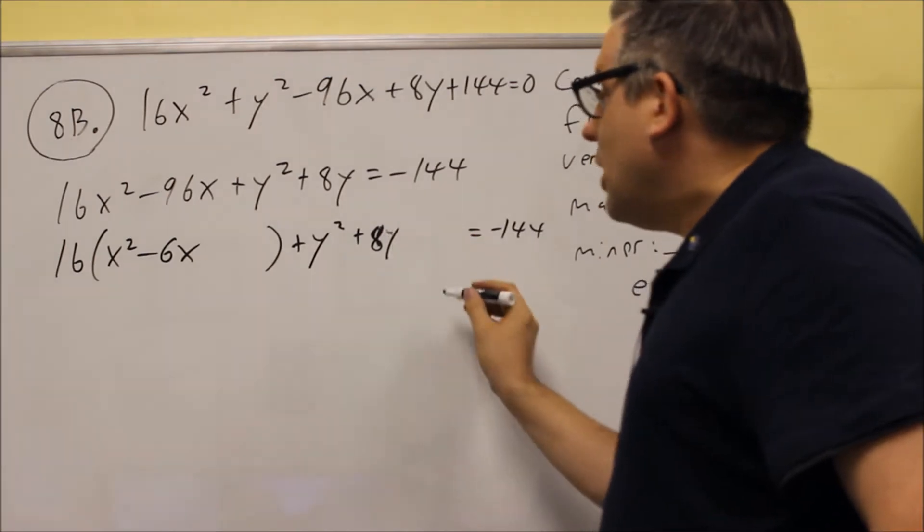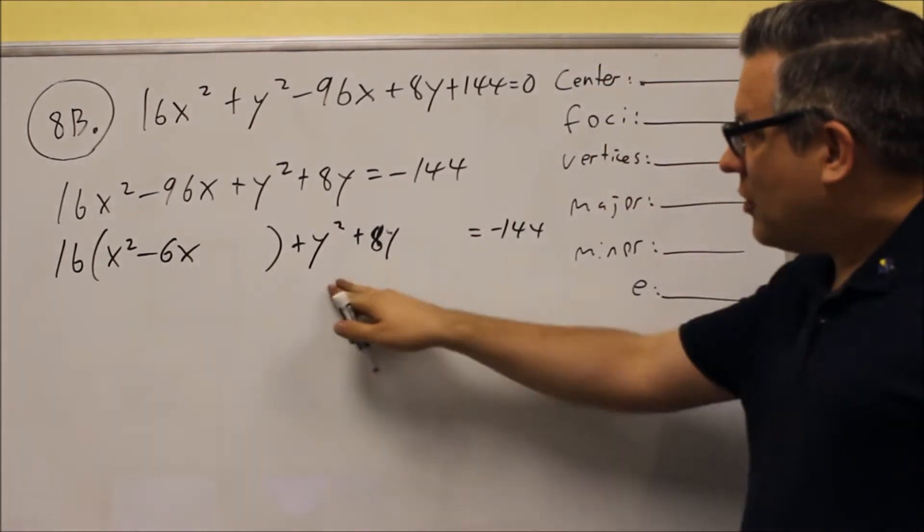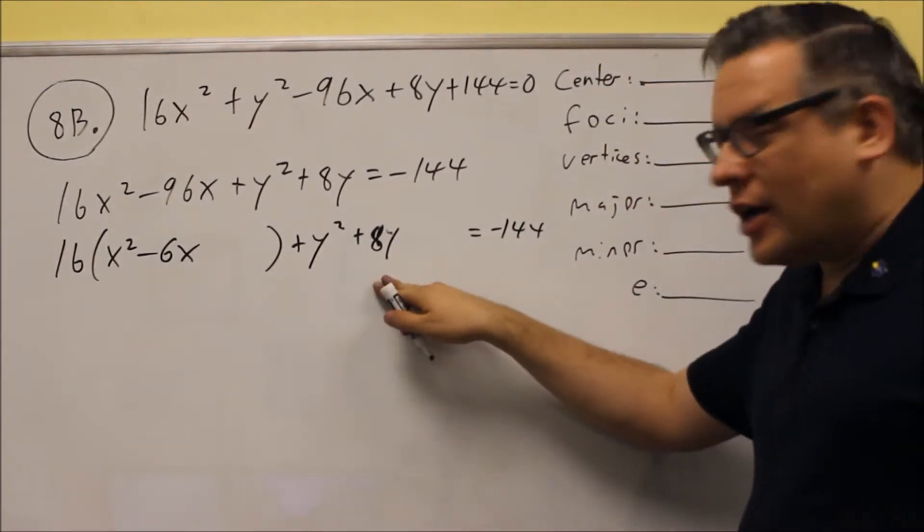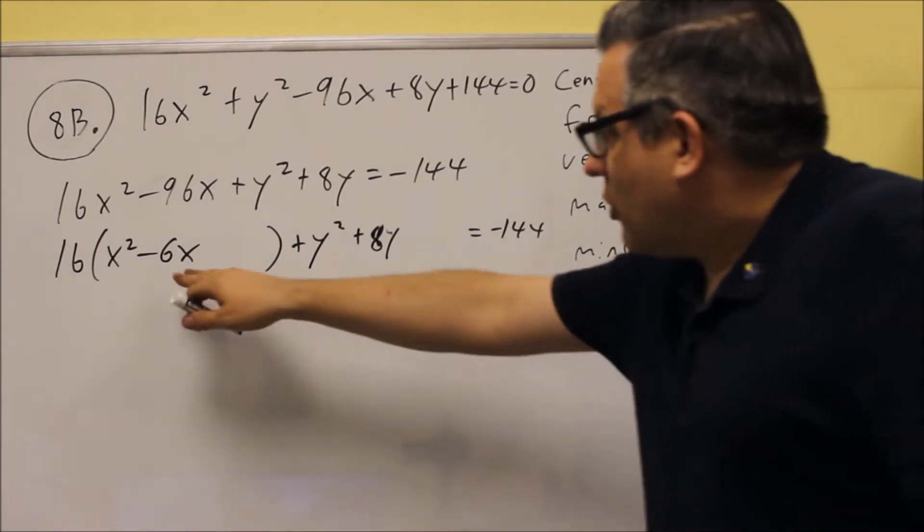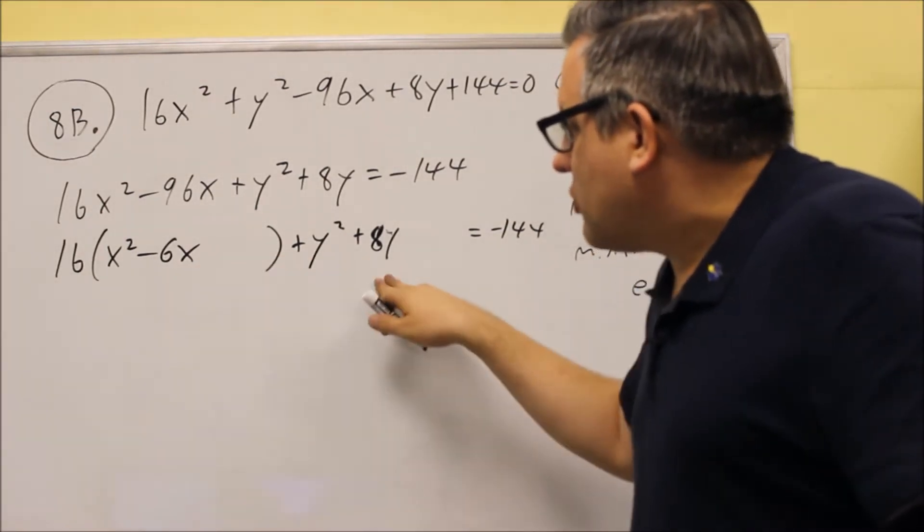So again, I'm leaving a space in there. Now this set, there's nothing to take out because I just have a Y squared and an 8Y, so nothing I have to worry about pulling out there. So I only have to do, I'm going to do complete the square with these two.